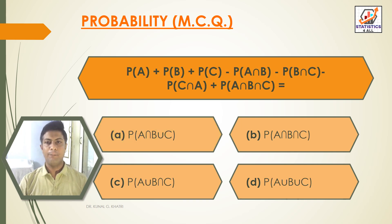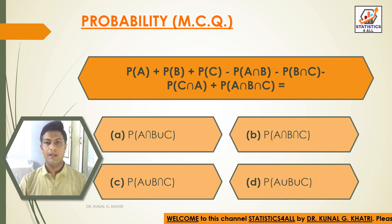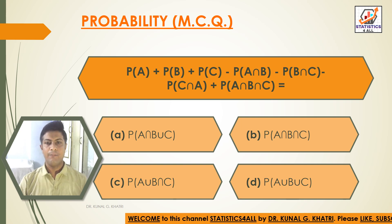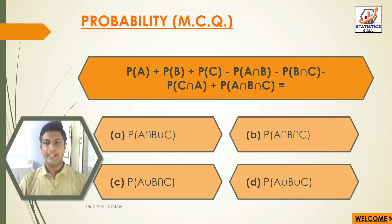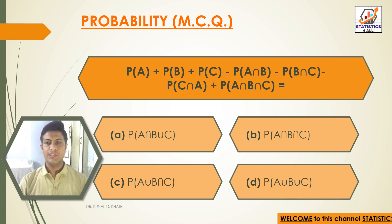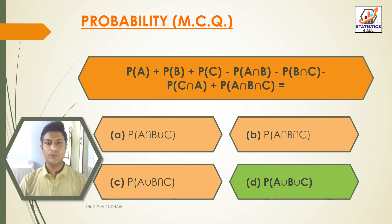Question 11: P(A) + P(B) + P(C) − P(A∩B) − P(B∩C) − P(A∩B∩C) equals? Option A: P(A∩B∪C). Option B: P(A∩B∩C). Option C: P(A∪B∩C). Option D: P(A∪B∪C). Answer: Option D — P(A∪B∪C) = P(A) + P(B) + P(C) − P(A∩B) − P(B∩C) − P(C∩A) + P(A∩B∩C).